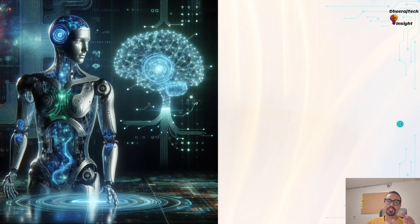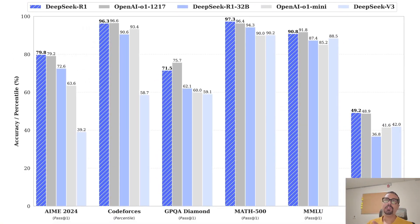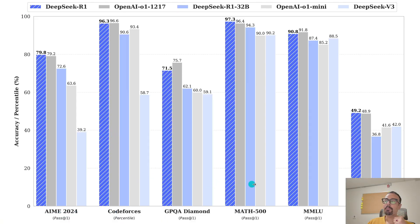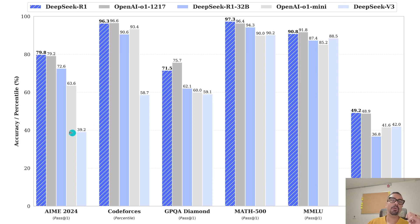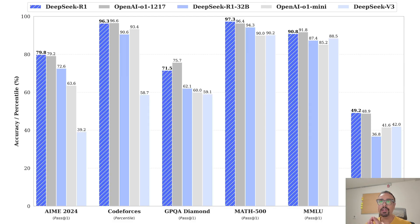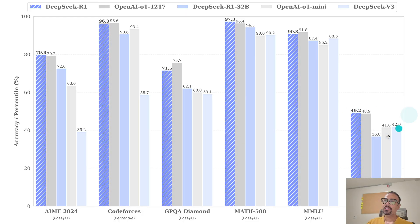Let's look at these benchmarks in a graphical format. Here we have DeepSeek R1 and OpenAI O1 1217, along with DeepSeek R1 32 billion parameters, OpenAI Mini, and DeepSeek V3. The performance benchmarks shown cover AIME, Codeforces, MATH 500, and MMLU. You can see that the blue bars representing DeepSeek R1 are ranking ahead of or very near to OpenAI across all metrics — and it is also an open-source model, which makes it even more impactful for the research community.